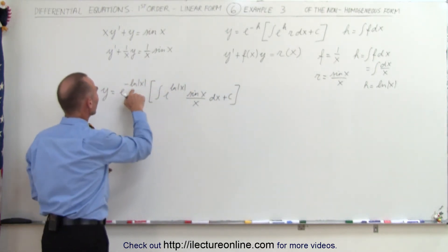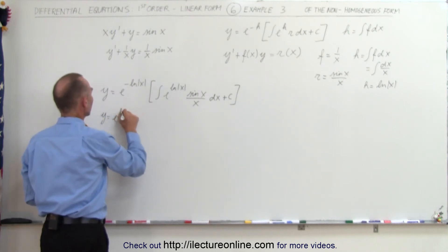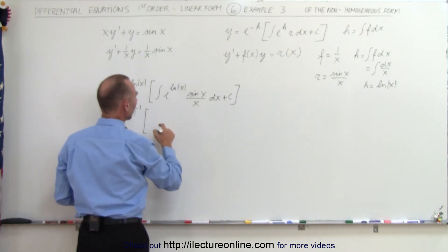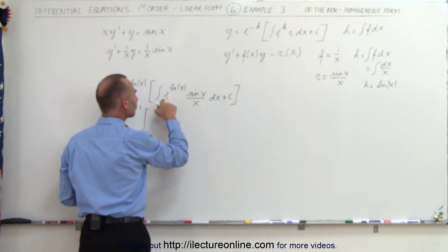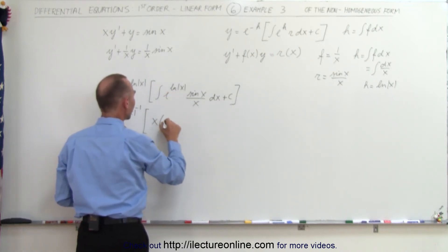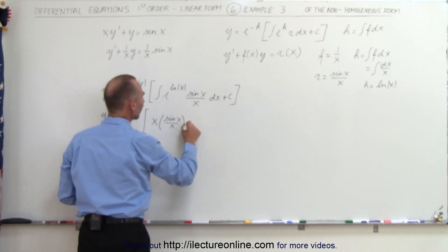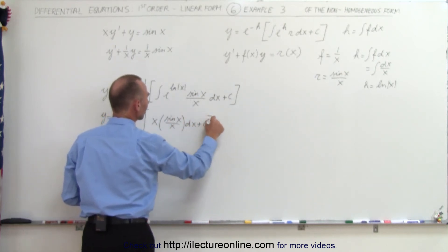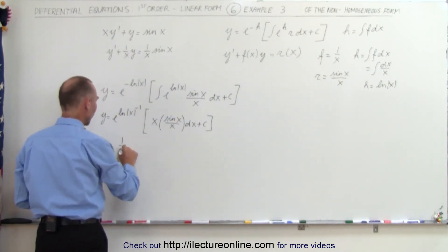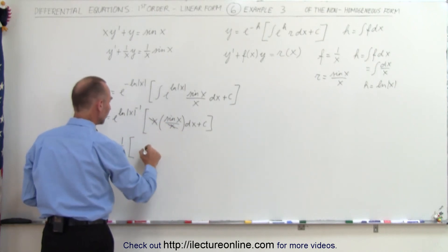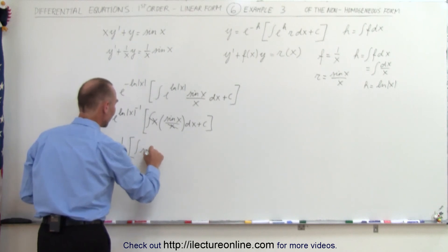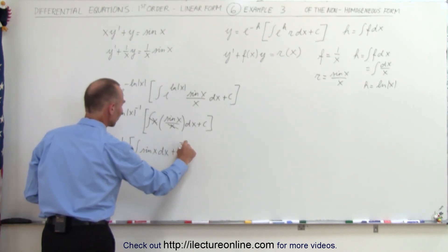Simplifying a little bit, we can write this as y equals e to the natural log of x to the minus 1, times the integral of e to the natural log of x — the exponent and the natural log are negated by the e — so this becomes simply x times sine of x over x dx plus a constant of integration. This simplifies to y equals 1 over x times the integral of sine of x dx plus a constant of integration.